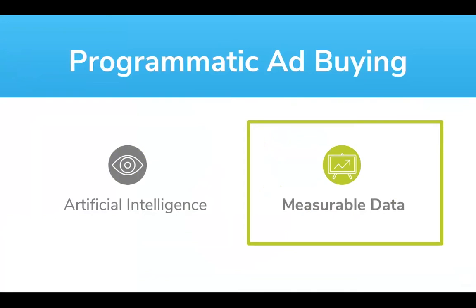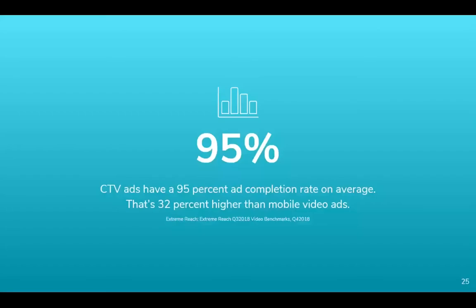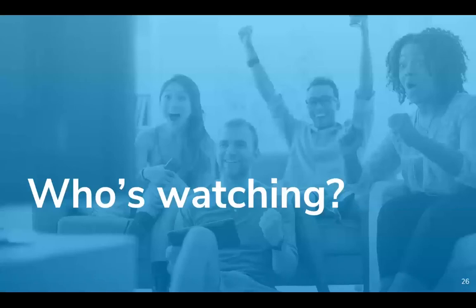Speaking of data, here's a little fact to think about. Viewers spend an average of two times longer engaging on a TV versus a smaller device such as a phone or tablet. CTV ads have a 95% ad completion rate on average, meaning 95% of ads are watched fully from start to finish — that's 32% higher than mobile video ads. But who's watching? As connected TV popularity grows, the demographics are starting to merge, reaching groups across ages and behaviors.